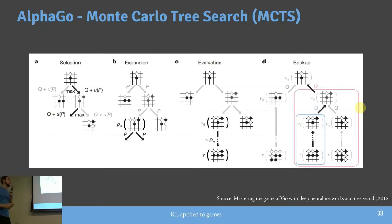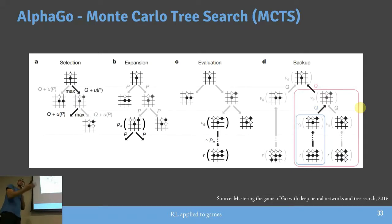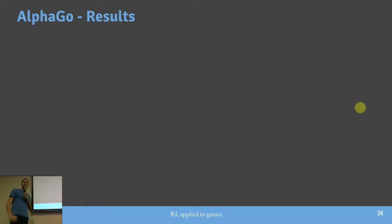Outra técnica importante é a Monte Carlo Tree Search, que já existia. Em jogos de tabuleiro, tenho um estado, um espaço de ações e preciso fazer uma busca. A Monte Carlo Tree Search expande todos os movimentos possíveis várias vezes durante simulações, até identificar os mais promissores. Antes de realizar cada movimento, faz-se várias simulações para ter certeza em qual parte investir através da Value Network. Com redes neurais para política e valor mais a Monte Carlo Search, o AlphaGo foi resolvido.